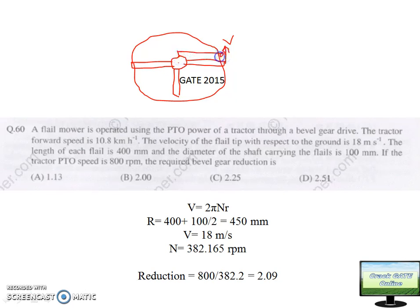So this V value is given: 18 meter per second. From here you can calculate what is the RPM of flail because you know the radius and diameter value. The length of each flail is 400 mm. This length is 400 mm and diameter of the shaft is 100 mm. This is 100 mm and this is 400. So its radius will be 50. From center, if we see tip distance, this will be 50 plus 400, so 450. So radius is 450 and its velocity is given: V equals 18 meter per second.